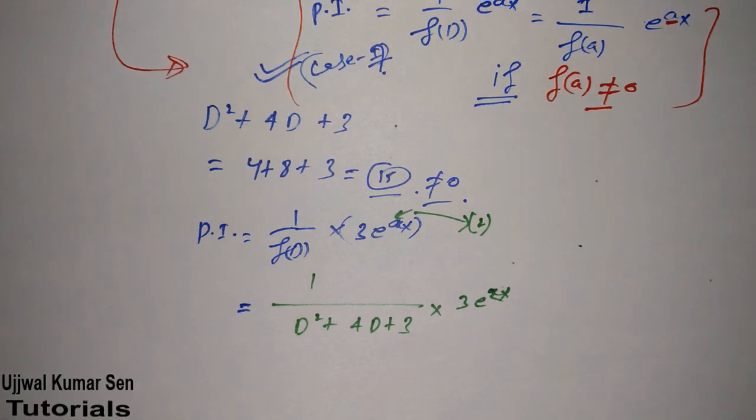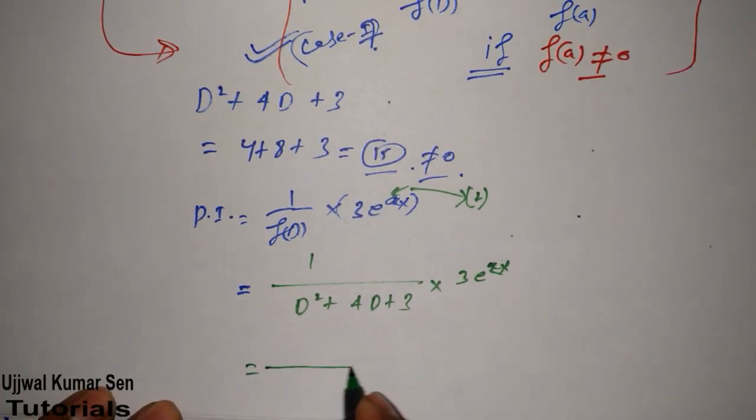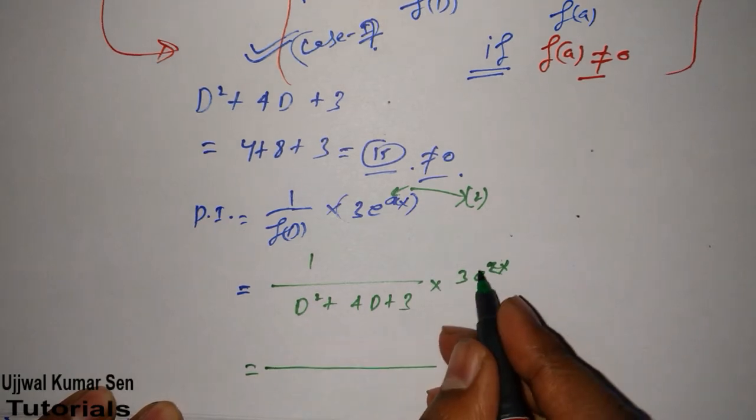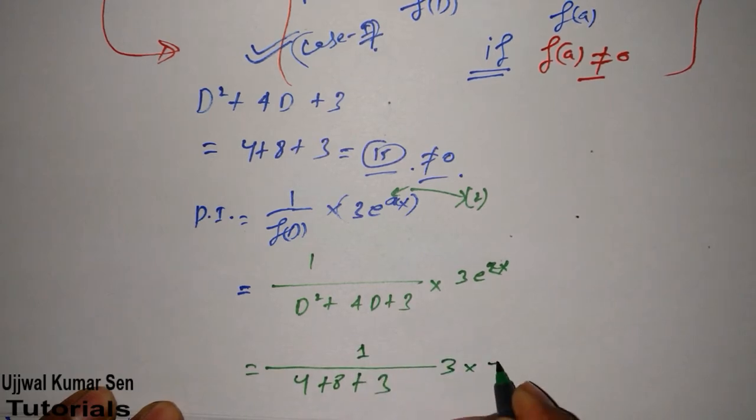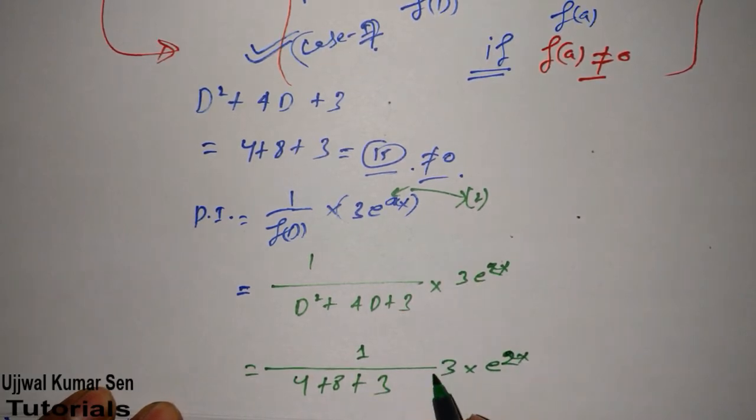In place of a we have to write 2 because in the question we have given e to the power 2x. What we will do: we will put the value of D, that is 2 here.